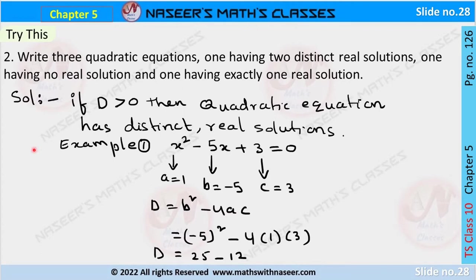We already know that if the discriminant value is greater than zero, then the quadratic equation has two distinct real solutions or roots. For example, take the quadratic equation x² minus 5x plus 3 equals 0. Here the value of a is 1 and b is the coefficient of x, that is b equals minus 5.